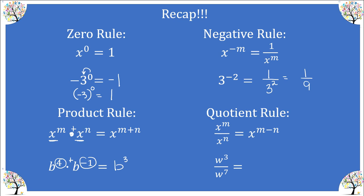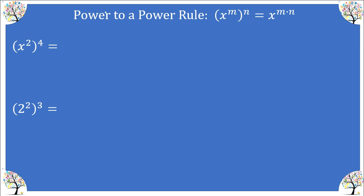The quotient rule says if you are dividing bases that are the same, you can write that as one factor by subtracting the top exponent minus the bottom exponent. In this example we have a base of W and we have three minus seven, which gives us negative four. Now we need to apply the negative rule so we reciprocate the factor of W to the denominator and make the four positive.